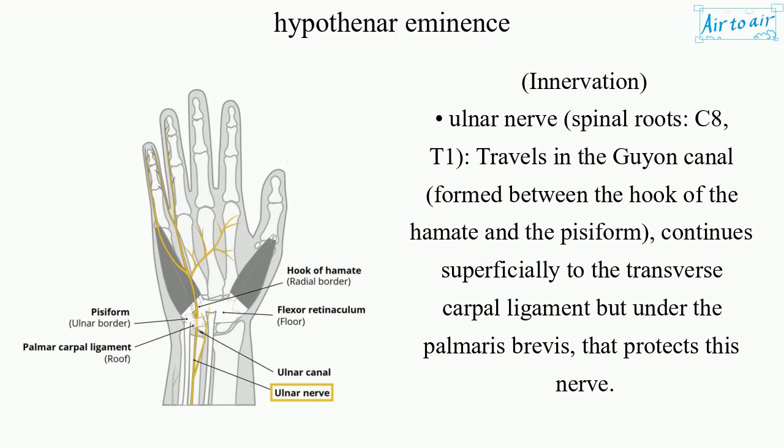Innervation: ulnar nerve, spinal roots C8, T1. Travels in the Guyon's Canal, formed between the hook of the hamate and the pisiform. Continues superficially to the transverse carpal ligament but under the palmaris brevis, that protects this nerve.